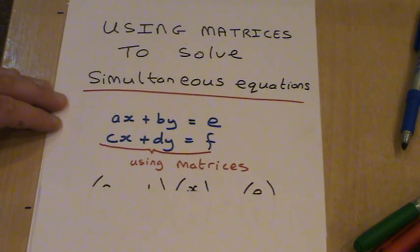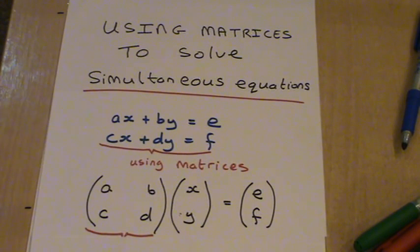Now using matrices we can rewrite this system of two equations as a, b, c, d times x, y equals e, f.